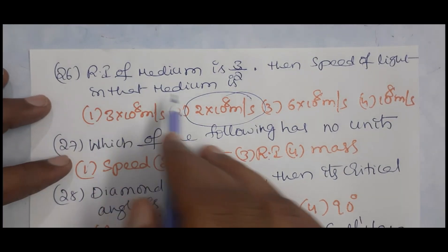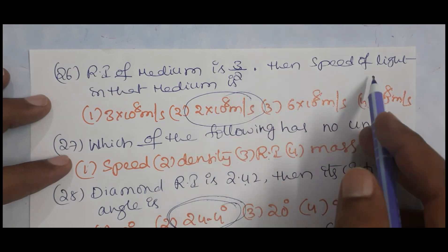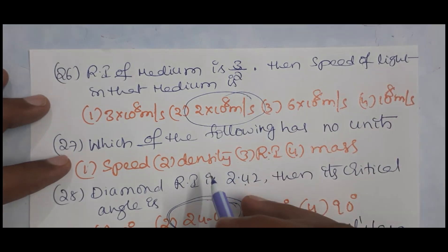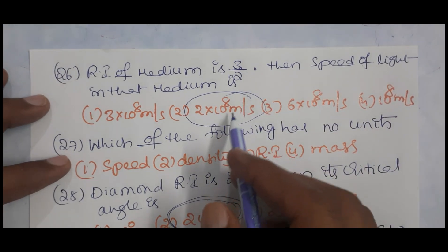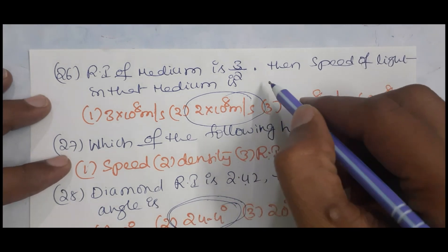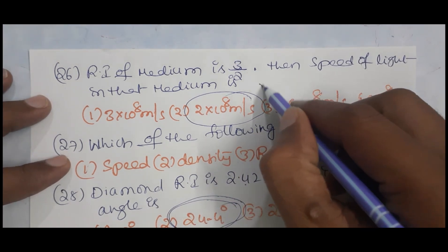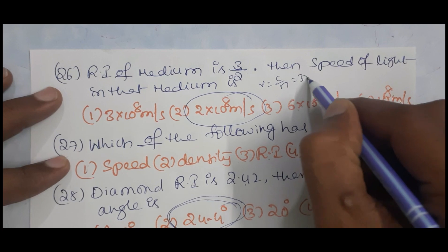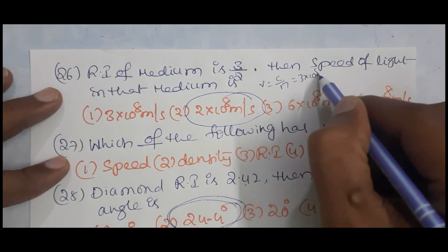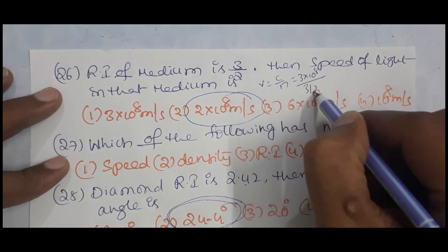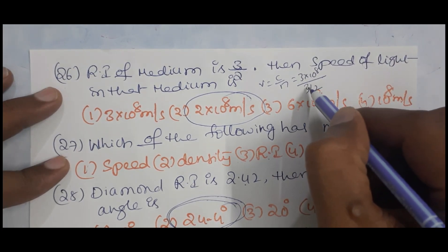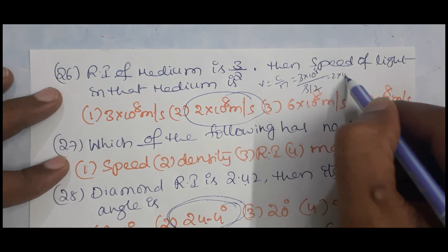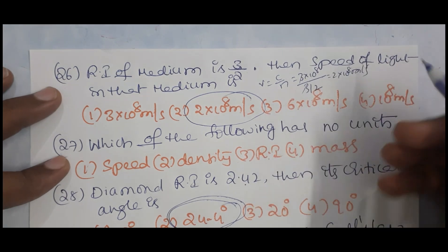If the refractive index of a medium is 3/2, then the speed of light in that medium is v = c/n = (3 × 10⁸)/1.5 = 2 × 10⁸ meters per second.